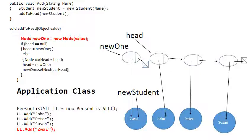The first thing that is done is a new node is created pointed to by newOne. That node immediately points to Zwei but its next pointer points to null. So the new node is not yet part of the linked list.